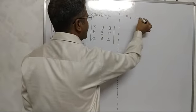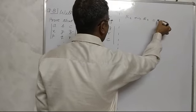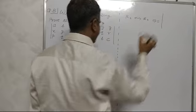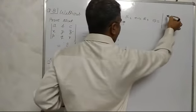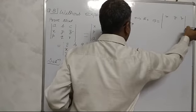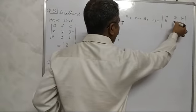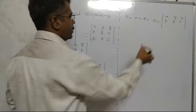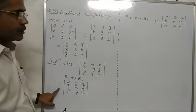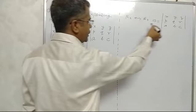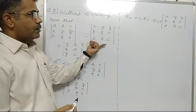Again, interchange R2 and R3. After R2 interchange R3, we have rows X, Y, Z; P, Q, R; A, B, C. After interchange, minus times minus gives plus. It is true.